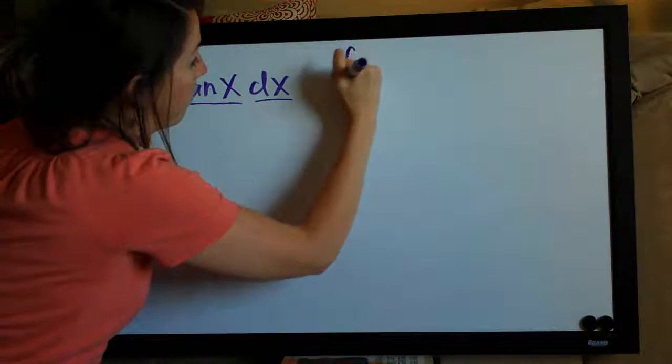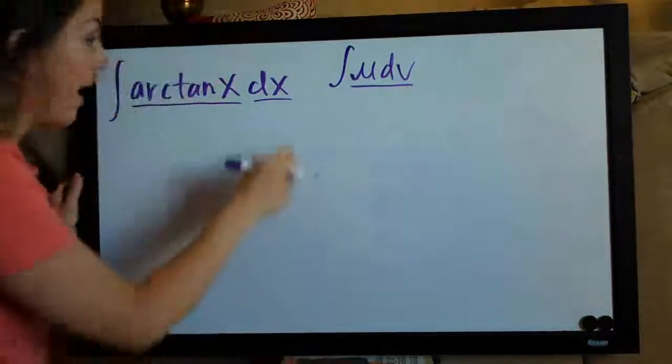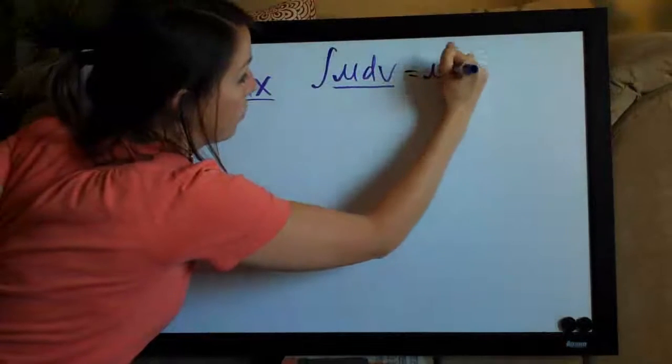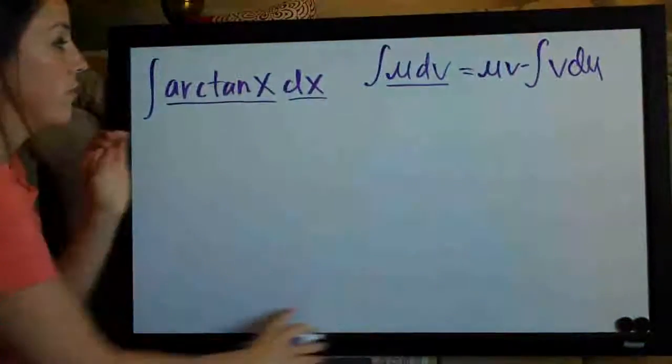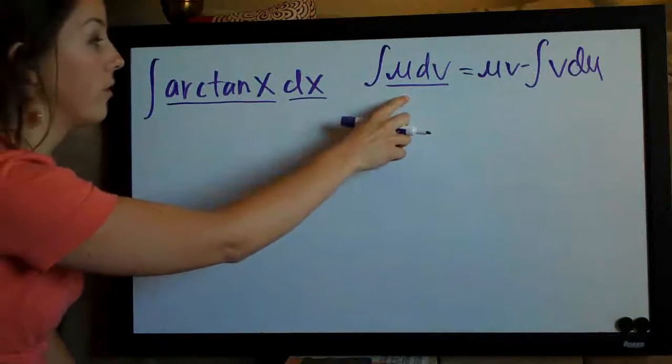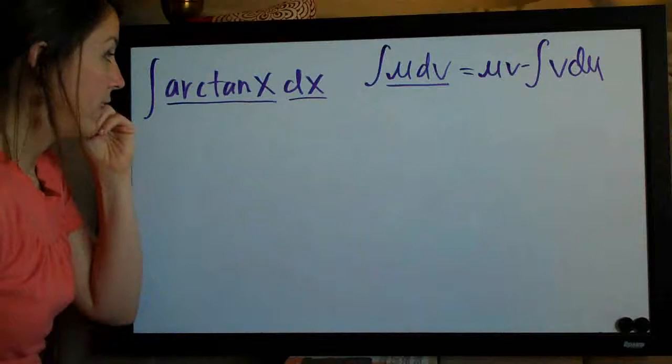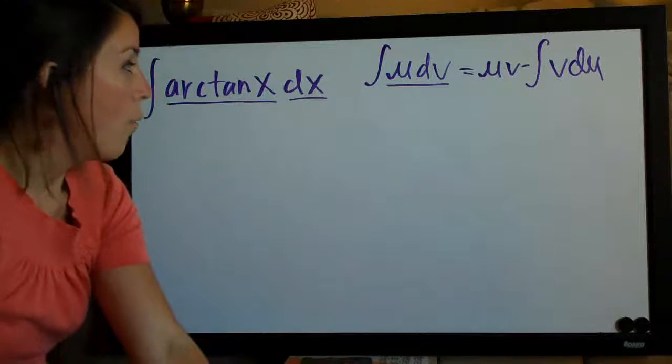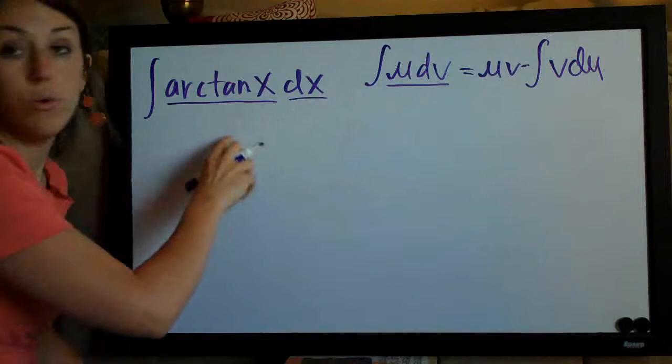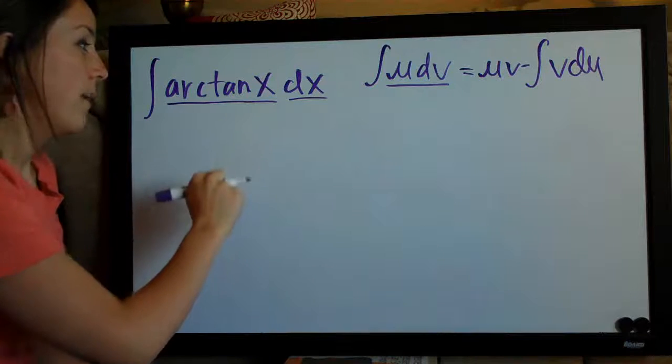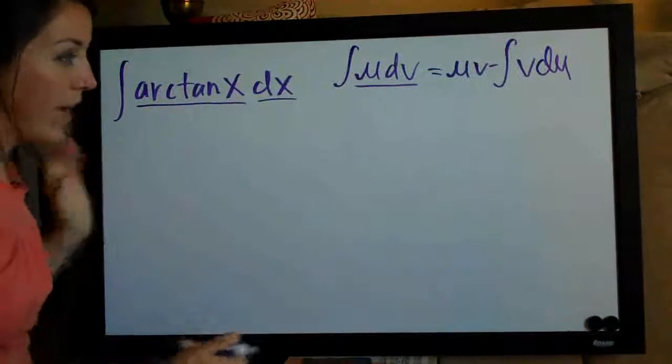Remember the integration by parts formula: ∫u dv, this part representing our function, equals uv minus the integral of v du. When we're using integration by parts, we need to first assign u and dv to values in our problem. We're going to assign u to arctan of x, which means that we're going to need to know the derivative of arctan of x.